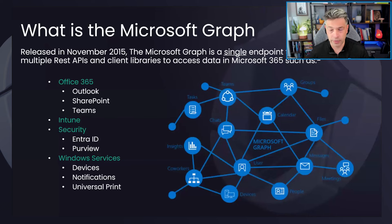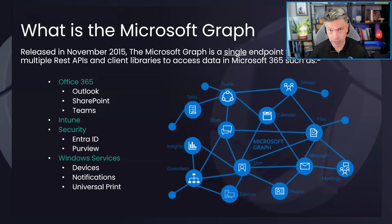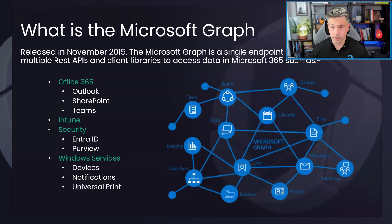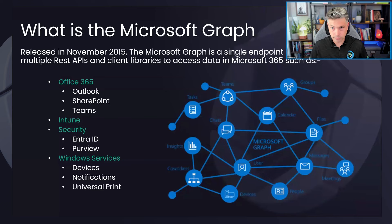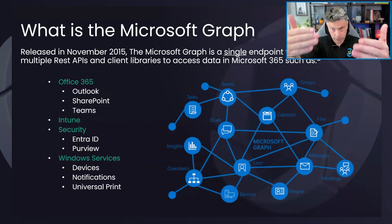The Microsoft Graph has been around for quite a few years now. If you think about it as a single endpoint — it's a REST API that exposes multiple REST APIs in the background and client libraries. Every time you access a Microsoft 365 service, whether that's Office 365, Teams, or Intune, you're going to be hitting the Graph API through a client app. It's a unified single endpoint that all communication comes into.